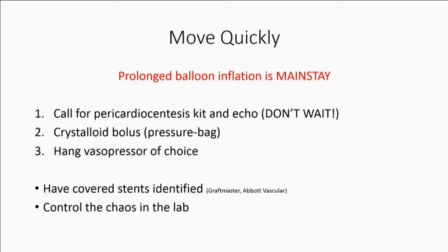It's very important in these situations to be concise with your staff. Call for a pericardiocentesis kit. Make sure you have adequate help in the room. Call for echo — if you don't use it, you don't use it, but have it available. Give a crystalloid bolus — you have to increase central venous pressure inside the heart to counter the effect of accumulating pericardial fluid. Hang your vasopressor of choice — dopamine or whatever you prefer — ready to initiate based on the patient's hemodynamics. Make sure your staff knows where your covered stents are in the lab, and control the chaos — within yourself and all team members. Make sure there's a single voice and that orders are voiced succinctly.